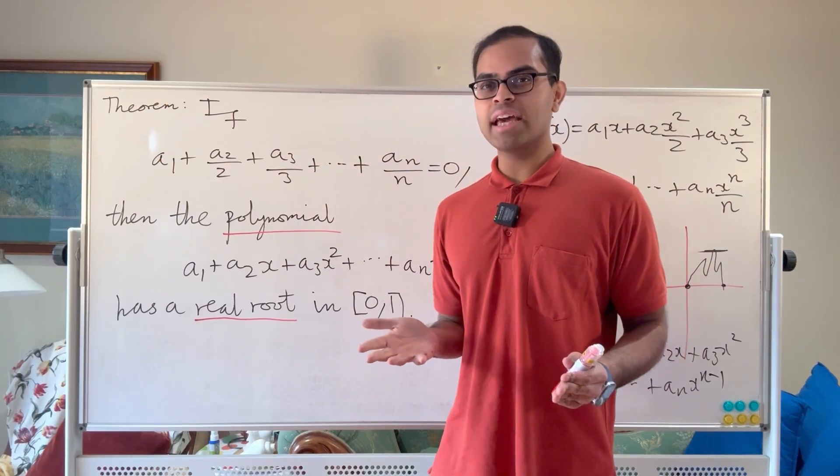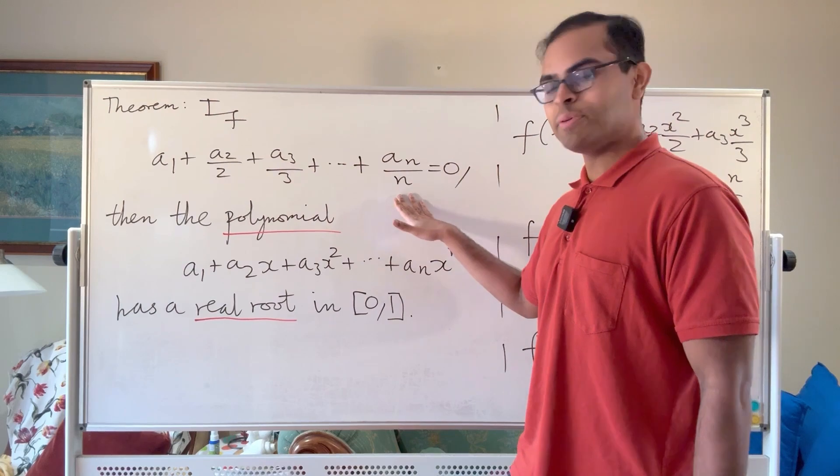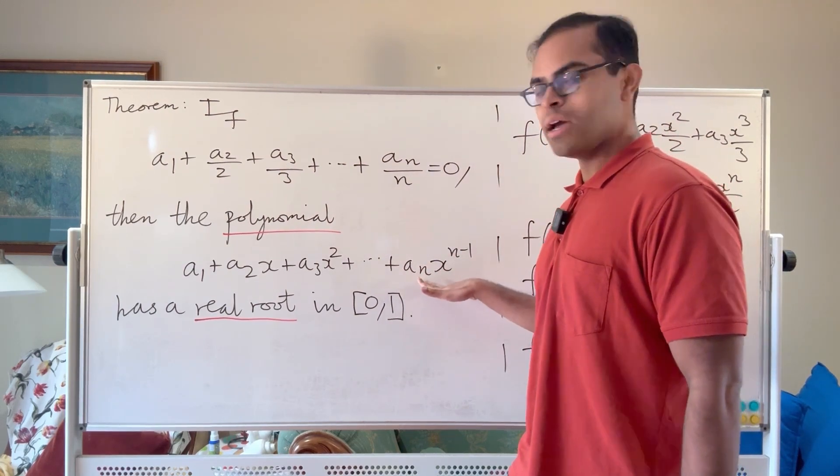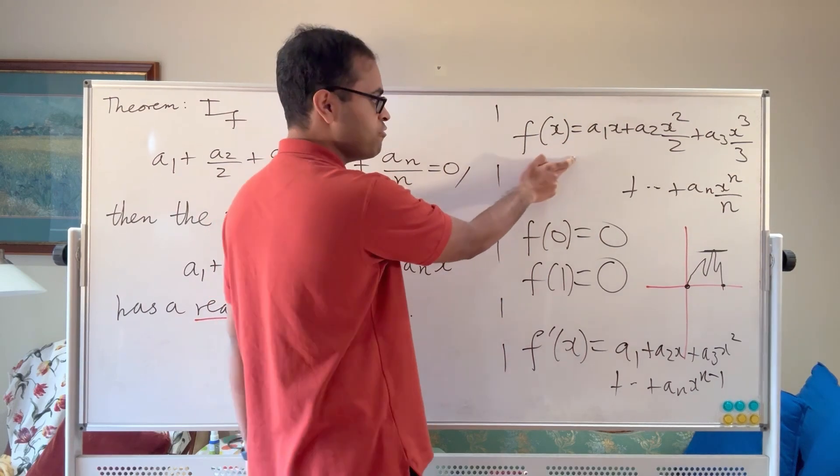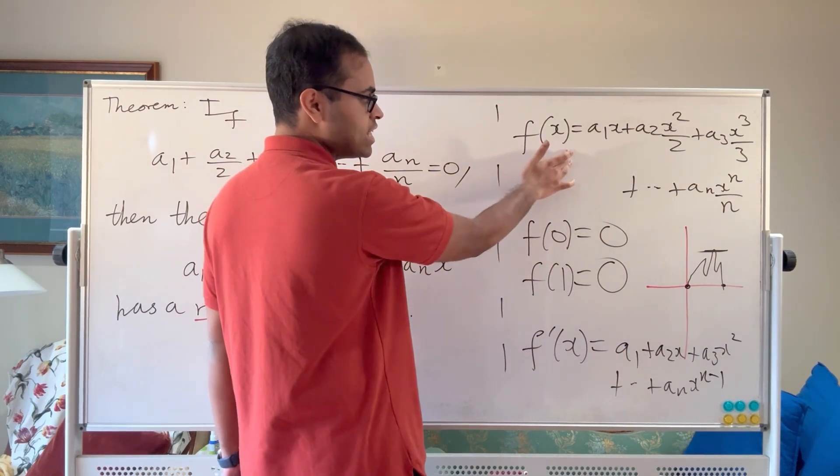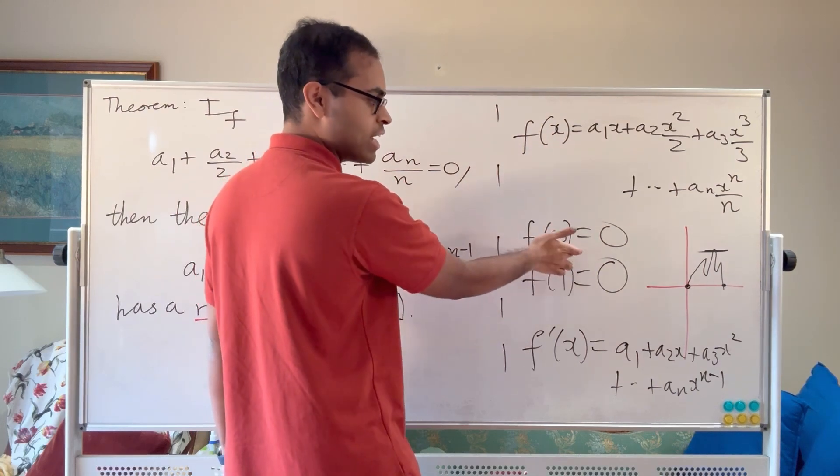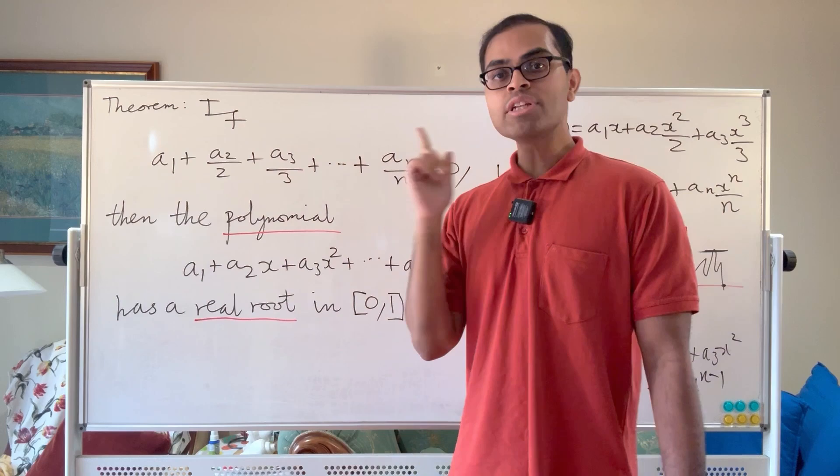Now another fun way of looking at this, I'll just briefly mention, is that you can think of this quantity here as being the integral from 0 to 1 of this polynomial. Because basically the antiderivative of this polynomial is this one, because f(x)'s derivative is the original polynomial. So if you take the antiderivative and then you plug in 1 and plug in 0 and subtract them, you get the definite integral from 0 to 1, which is going to be 0.